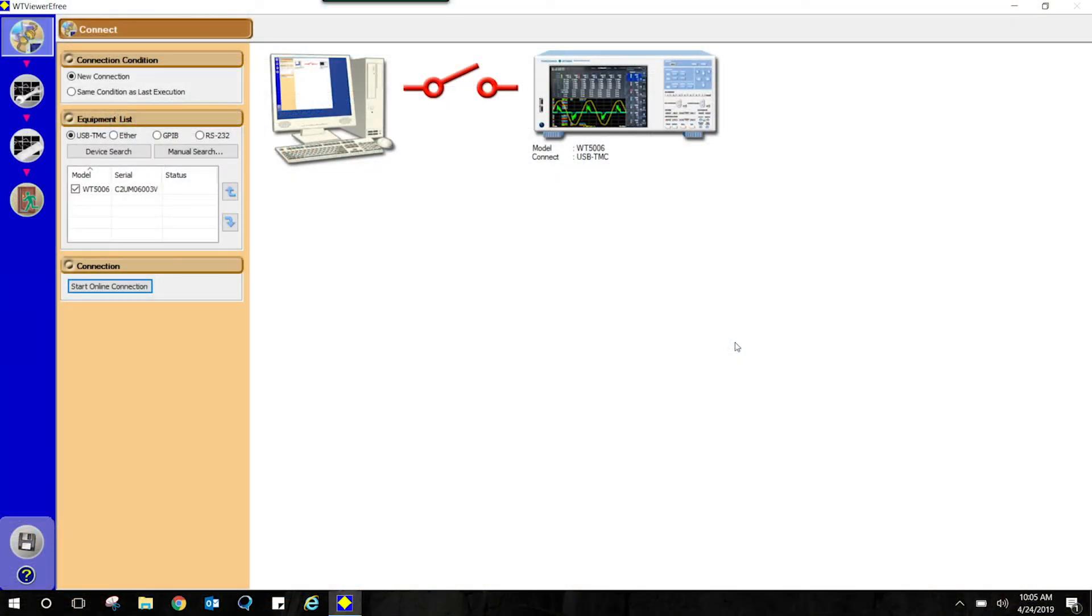We will now connect to our WT5000 using the WTViewer eFree software. With the USB connection, we see that the software automatically finds the WT5000. Once this software has found our WT5000, we will select the Start Online Connection button. We will then select the measure display of the WTViewer eFree software.